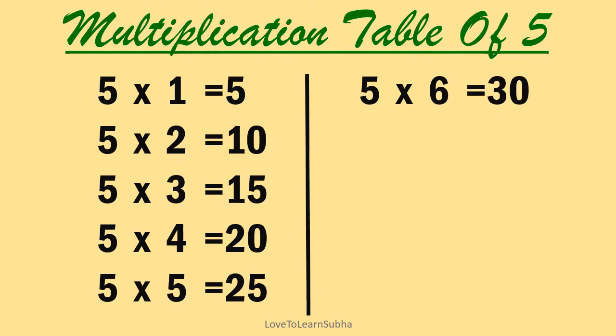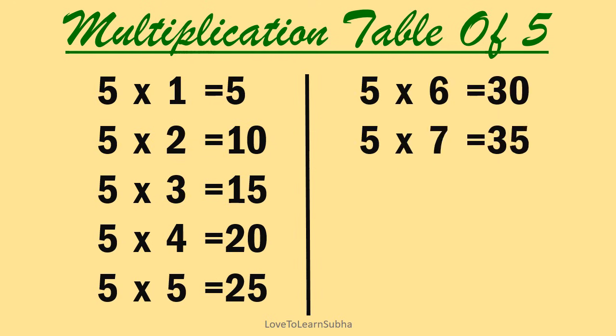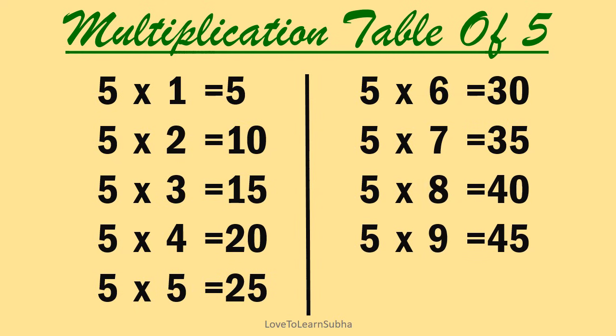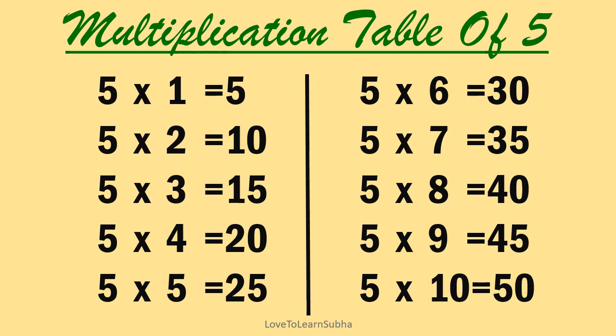5 sixes are 30, 5 sevens are 35, 5 eights are 40, 5 nines are 45, 5 tens are 50.